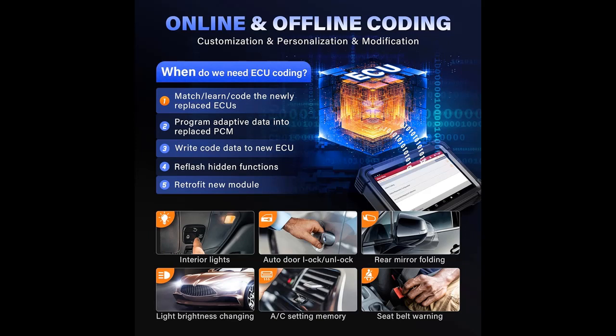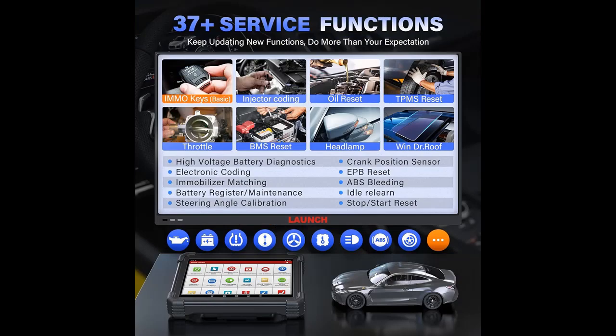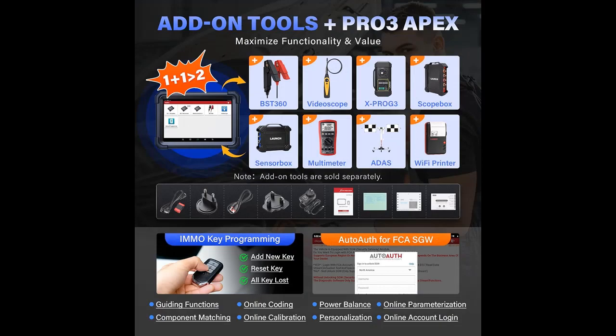Dealer Level All System Diagnostics. Auto VIN does automatic vehicle identification without manually inputting. Exclusive Launch Remote Diagnostics makes distance diagnostics possible, from Launch Tools to Launch Tools or PC. Guided Functions provide step-by-step instructions.